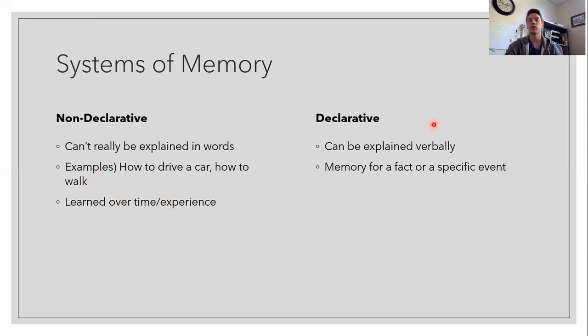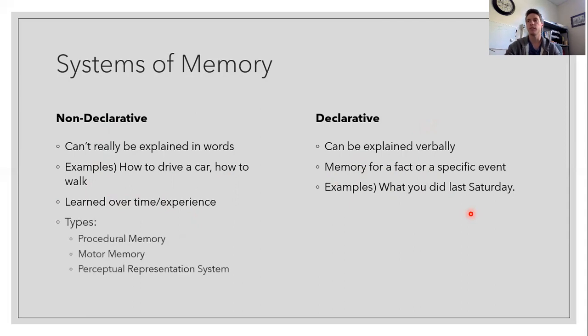And that's, again, in contrast to declarative memories, which include things like, what did you do last Saturday? So from a systems of memory perspective, our non-declarative systems are our procedural memories, our motor memories, and the perceptual representation system.